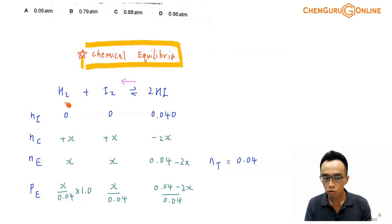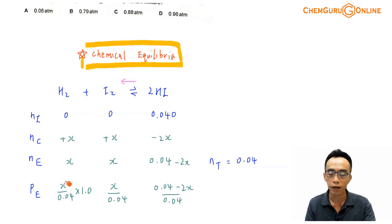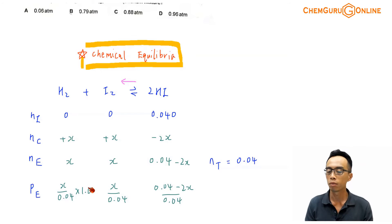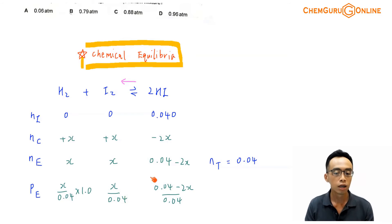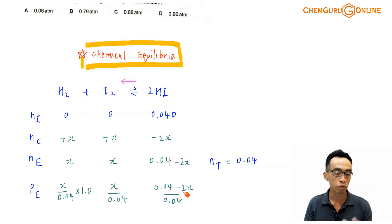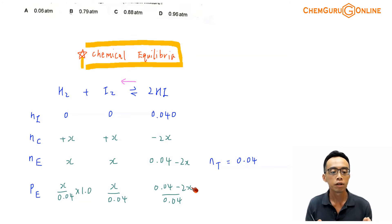The partial pressure of H2 equals its mole fraction multiplied by the total pressure: X divided by 0.04, multiplied by 1.0 atmosphere, which gives X/0.04. Similarly, the partial pressure of I2 is also X/0.04. For HI, the partial pressure is (0.04 − 2X) divided by 0.04, multiplied by 1 atmosphere. So now we have the partial pressure of each component at equilibrium.